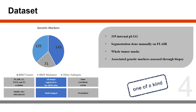The dataset we curated includes 339 internal PLGG patients, which is one of a kind in this topic. The segmentation was done manually on FLAIR sequence, and whole tumor masks were created during the segmentation process. Associated genetic markers were assessed through biopsy. The classes are imbalanced, but not drastically — we have 143 cases for BRAF fusion, 71 cases for BRAF mutation, and the rest from other subtypes.